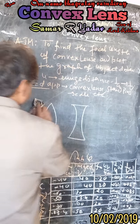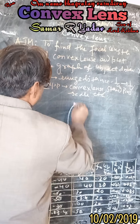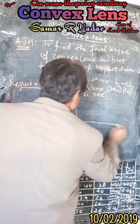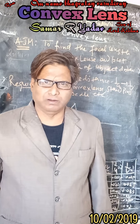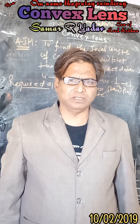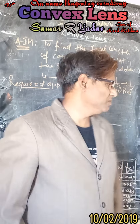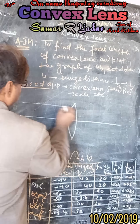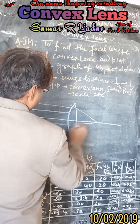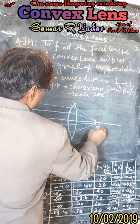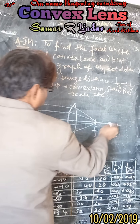For a convex lens, rays coming from an infinite distance converge at one point — that gives us the focal length. Rays parallel to the principal axis converge at a point called the focal point, and double that distance is known as the center of curvature or radius of curvature.